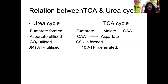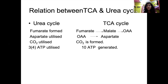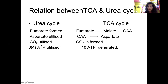Comparing the urea cycle and TCA cycle: in the urea cycle, fumarate is formed, while in the TCA cycle fumarate is consumed. In the urea cycle aspartate is utilized, while in the TCA cycle oxaloacetate is converted to aspartate. In the urea cycle CO2 is utilized, while in the TCA cycle CO2 is formed. The urea cycle consumes ATP, while the TCA cycle is the main source of ATP in the body, generating ten ATPs per cycle.